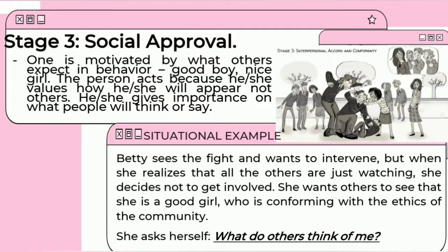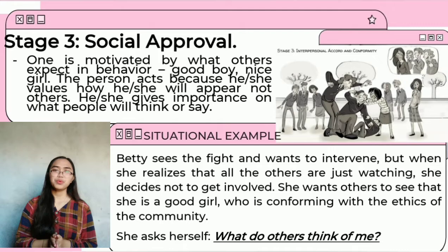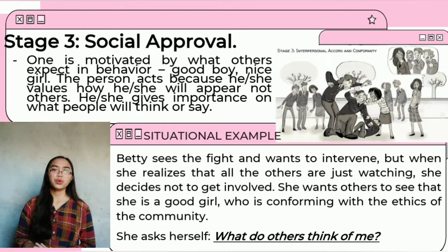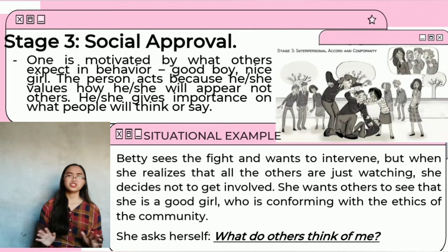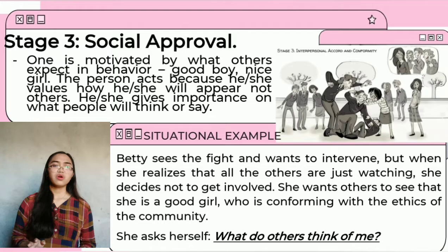We're down to our third stage, which is social approval. One is motivated by what others expect in behavior — good boy or nice girl. The person acts because he or she values how he or she will appear to others, giving importance to what other people will think or say. For instance, at stage three, interpersonal accord and conformity guide our moral judgments. Betty sees the fight and wants to intervene, but when she realizes all the others are just watching, she decides not to get involved. She wants others to see that she is a good girl who is conforming with the ethics of the community. She asks herself, what do others think of me?